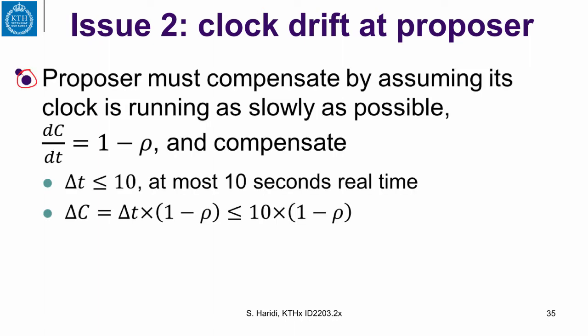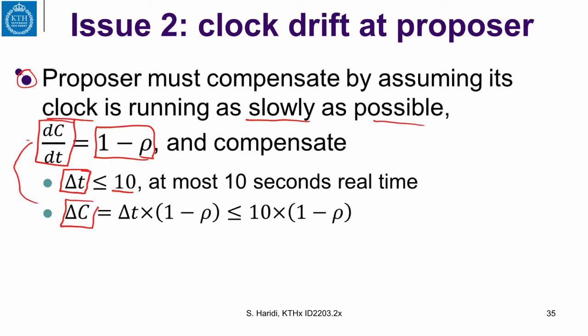The proposer must compensate by assuming its clock is running as slowly as possible — that is, assuming a clock rate of 1-ρ. This means the real time duration must be at most 10 seconds, and the corresponding clock duration will be the real time duration times (1-ρ), which is slightly smaller. Therefore, the proposer cannot wait a full 10 clock seconds for its lease to expire; its lease will expire after 10×(1-ρ) clock seconds.